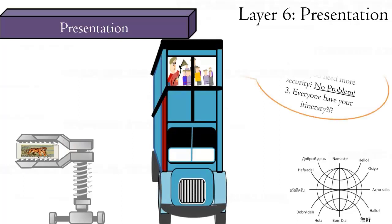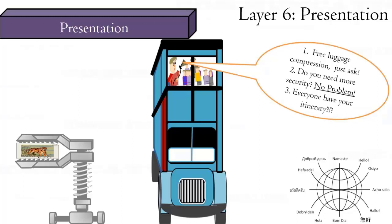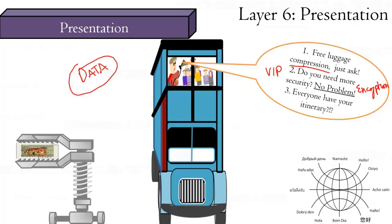A transceiver — the device on a NIC that allows communication between copper and fiber networks — may also work at this presentation layer, though some define it at the physical layer. In the bus analogy, the presentation layer is like a tour guide on a double-decker bus who translates everything for passengers, repacks their luggage like compression, and adds extra security for VIP passengers like encryption. The terminology for data at this layer is actually called data — no longer segments, datagrams, or frames.